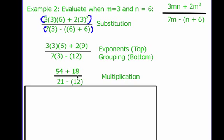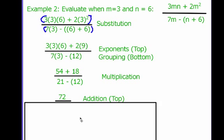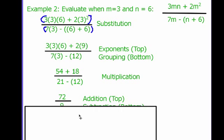Now I've done all my multiplying on the top and the bottom. Up top, I'm going to be adding 54 plus 18, which gives me 72. On the bottom, I'm going to be subtracting 21 minus 12, which gives me 9.